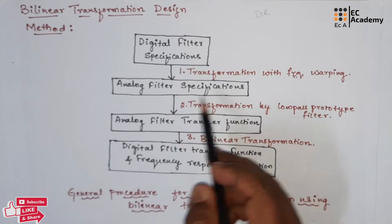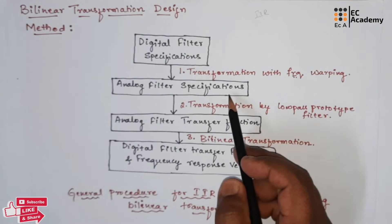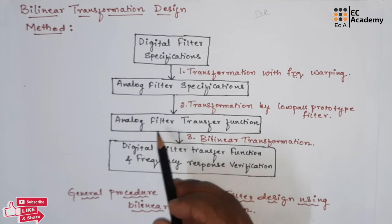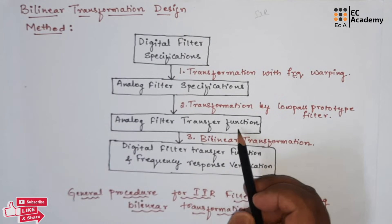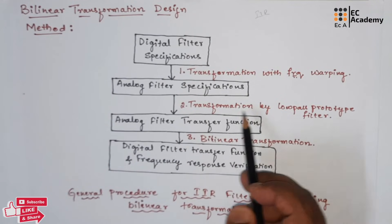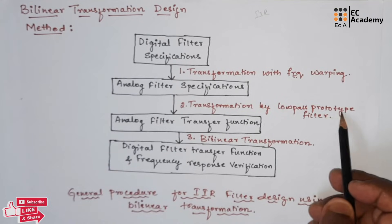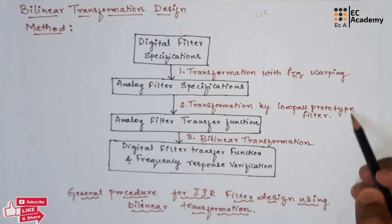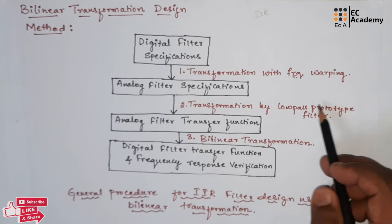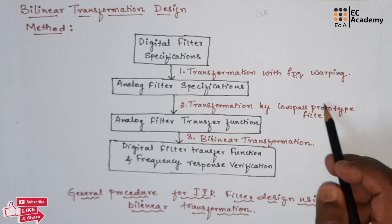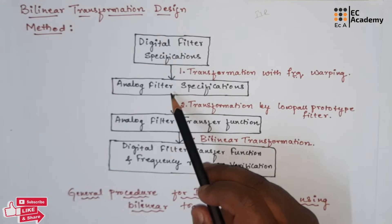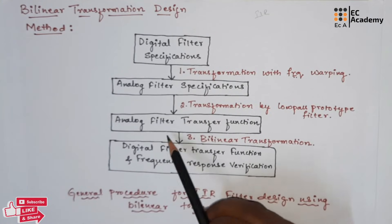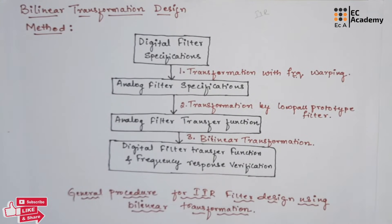Once the analog filter specifications are obtained, those specifications are transformed into an analog filter transfer function by using transformation by low-pass prototype filters. So, we will take a low-pass prototype filter. Using these low-pass prototype filters, we can convert analog filter specifications into an analog filter transfer function.